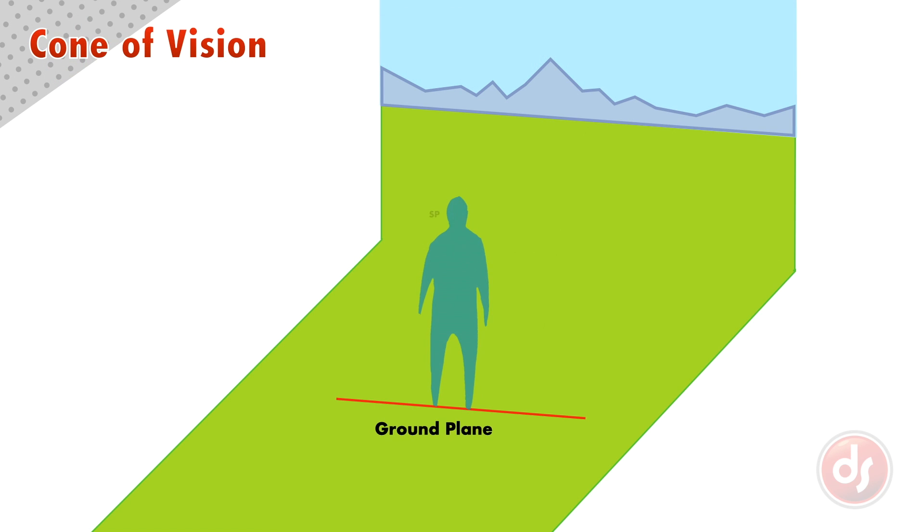In perspective drawing, a viewer stands on the ground plane at the station point and sees a scene through the picture plane. Their vision hits the picture plane at the center of vision point on the horizon line.